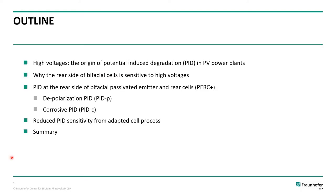Here is the outline of the talk. We will first see why PV modules in power plants suffer from potential induced degradation, and then we will see why especially bifacial solar cells are sensitive to PID at the rear side. The PID mechanisms that can occur at the rear side, especially for bifacial solar cells of the PERC type, are PID of the depolarization type and PID of the corrosive type. But the PID sensitivity on cell level can be reduced in an adapted cell process. We will also see illuminated PID test results and end with a summary.